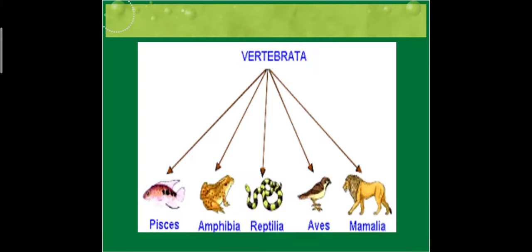Vertebrates include class Pisces, that is fish; class Amphibia, animals which live both on land and water; class Reptilia, reptiles; class Aves, that is birds; and class Mammalia, that means animals which give birth to young ones or have mammary glands.